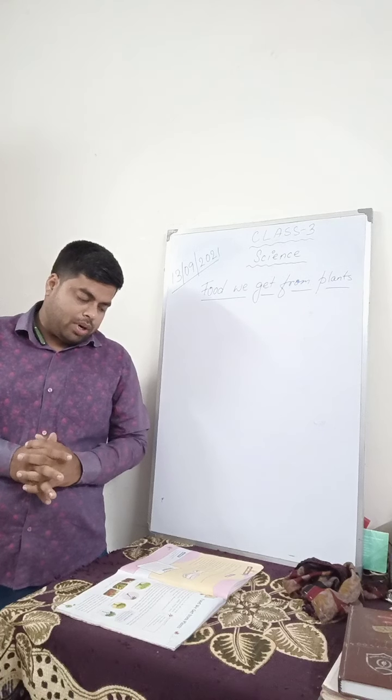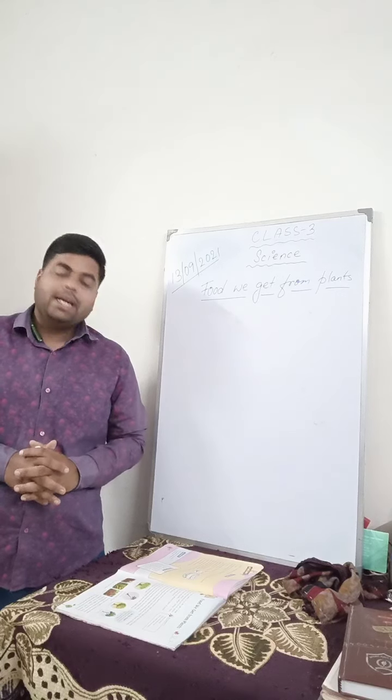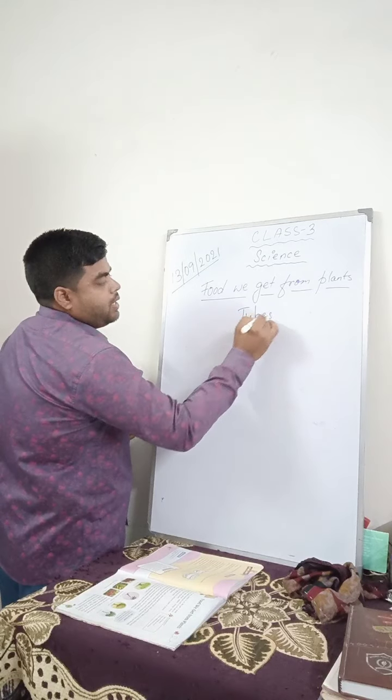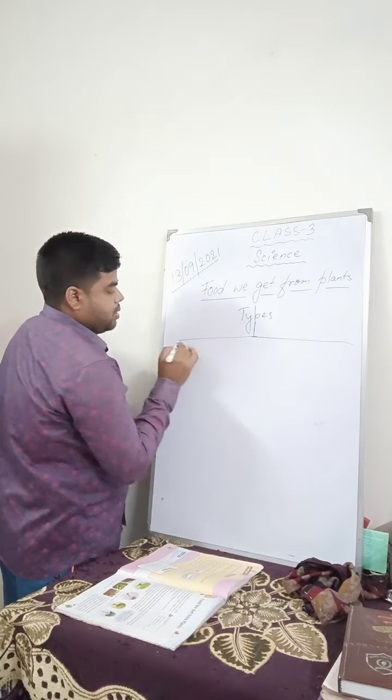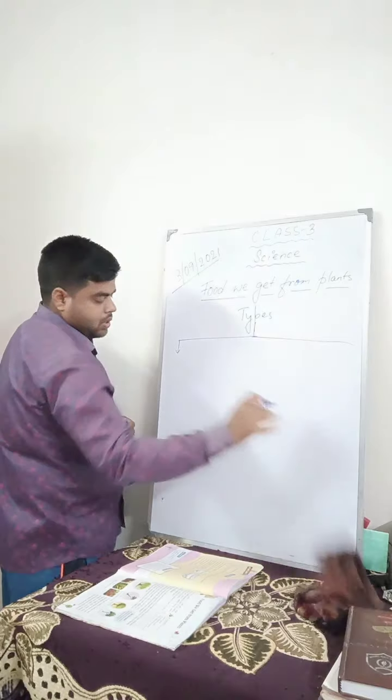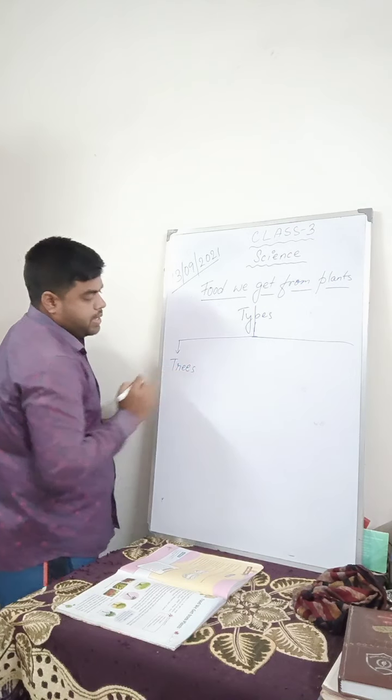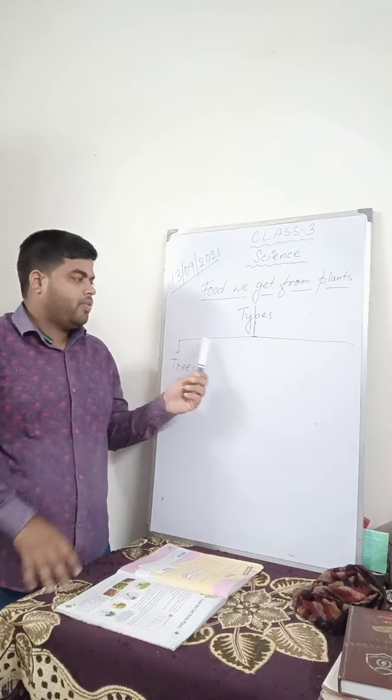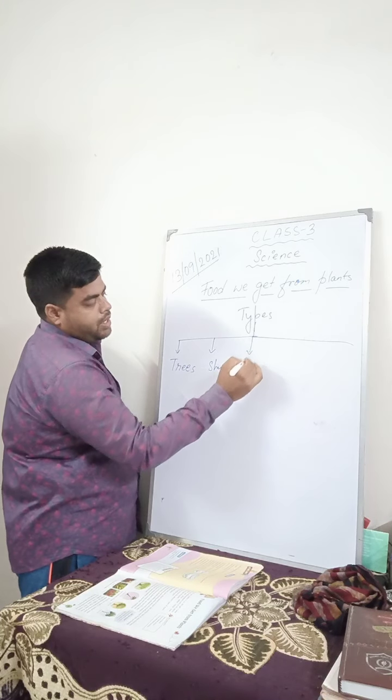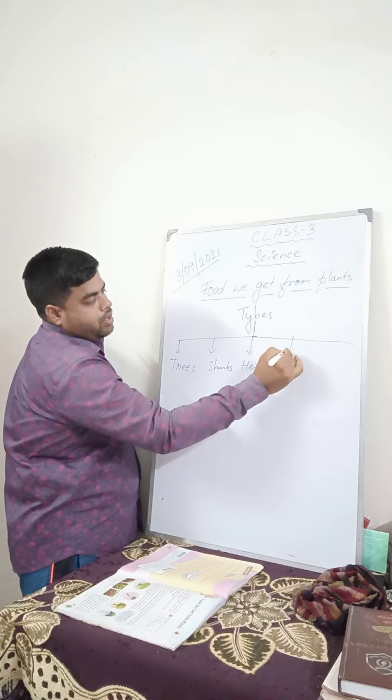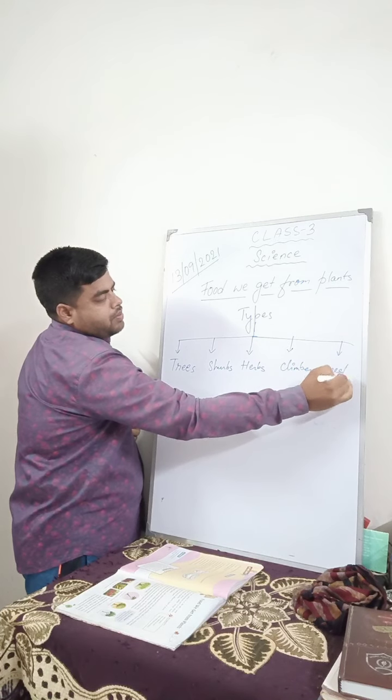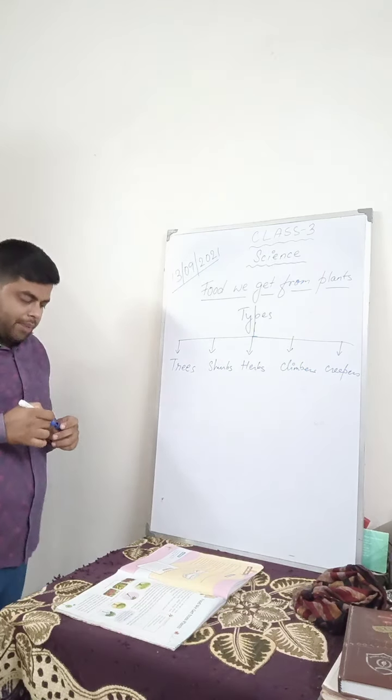Let us learn about the different types of food that are very important in our life. Let us learn about the different types of plants and their edible parts. Types of plants. Plants are categorized into three types mainly. First one is trees, the second one is shrubs, then you have herbs, then you have climbers, then you have creepers.